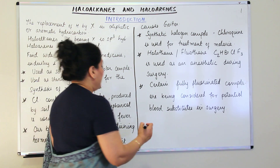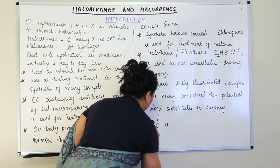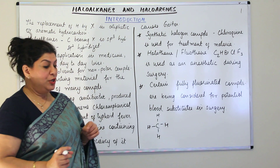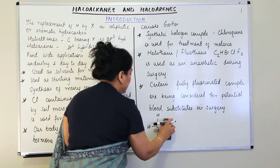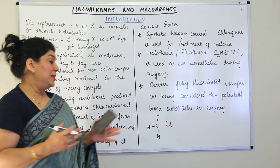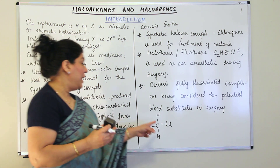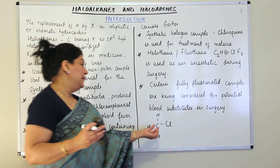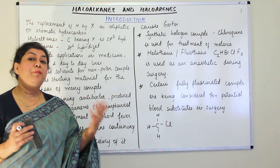Let's take an example — methane. Methane is CH4. It has four hydrogens. So if one of the hydrogens of methane is replaced by, let's say, chlorine, it forms chloromethane. This has become a haloalkane because one of the hydrogens of the alkane has been substituted by a halogen atom, forming chloromethane.